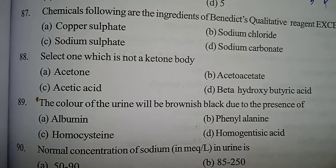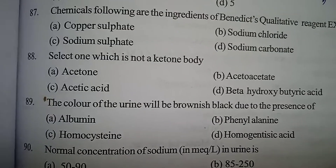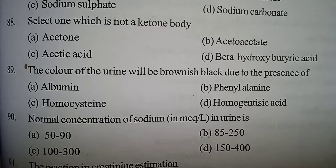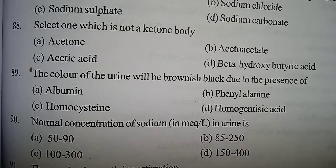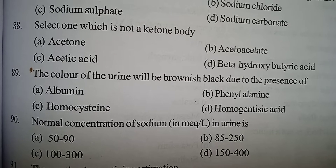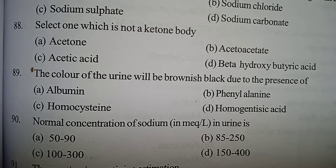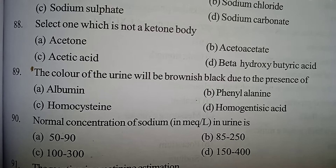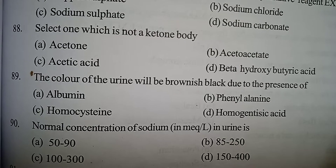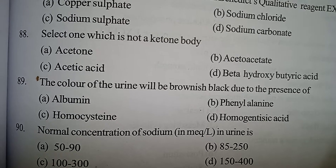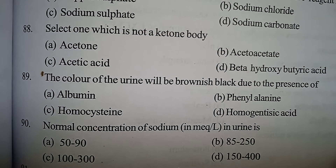Correct answer: the color of the urine will be brownish-black due to homogentisic acid. Next question regarding reference range values: Option A: 50 to 90. Option B: 85 to 250. Option C: 100 to 300. Option D: 150 to 40. Correct answer: Option B, 85 to 250 — this may vary from lab to lab.